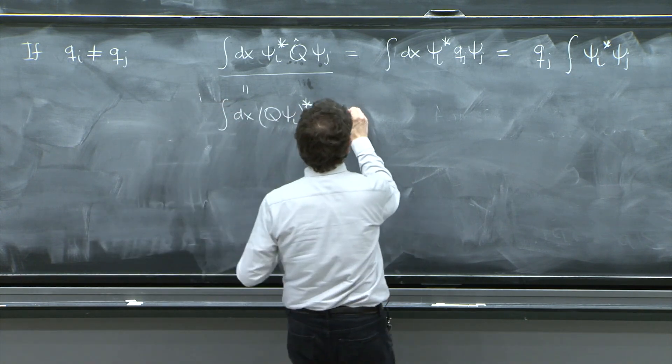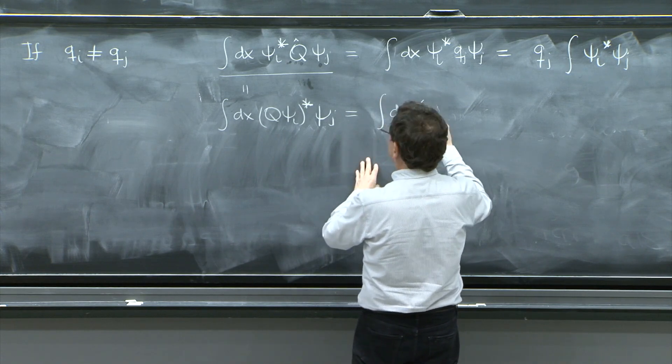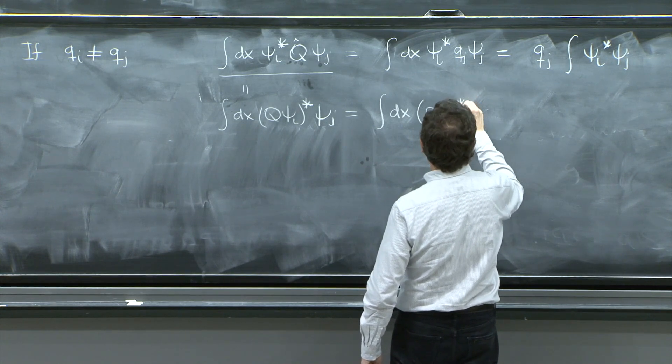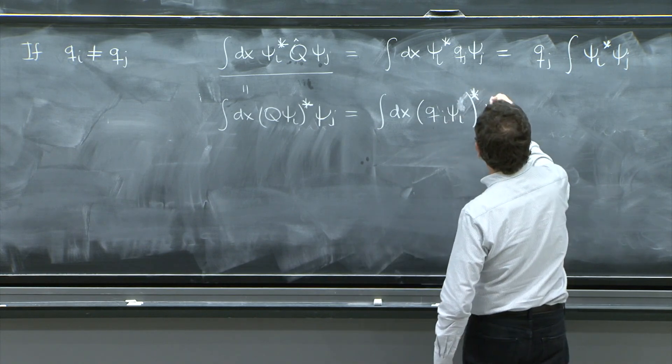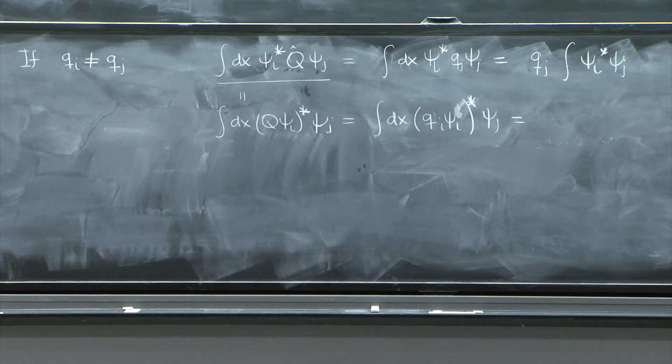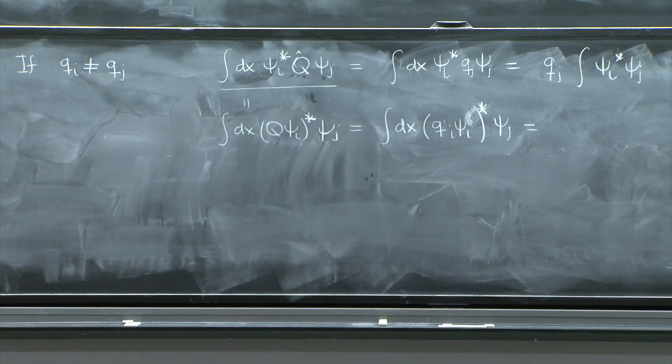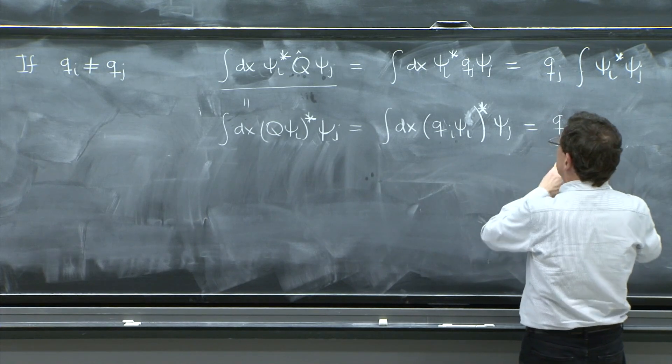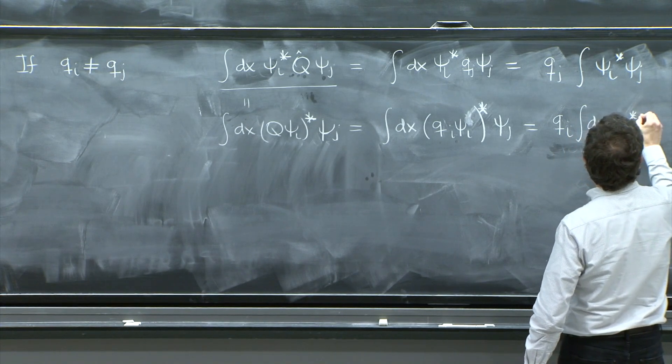Now, the other thing I can do is use the property that Q is Hermitian and move the Q to act on this function. So this is equal to integral dx Q psi i star psi j. And now I can keep simplifying as well. And I have dx. And now I have the complex conjugate of qi psi i star psi j. And remember, qi is an eigenvalue of a Hermitian operator. We already know it's real. So qi goes out of the integral as a number because it's real and it's not changed. Integral dx psi i star psi j.